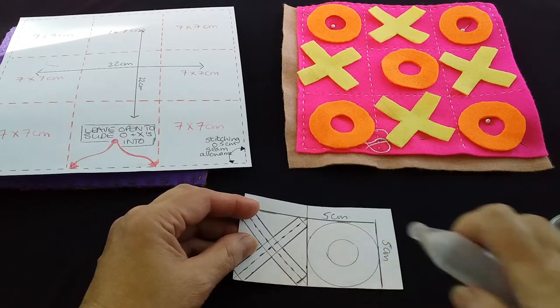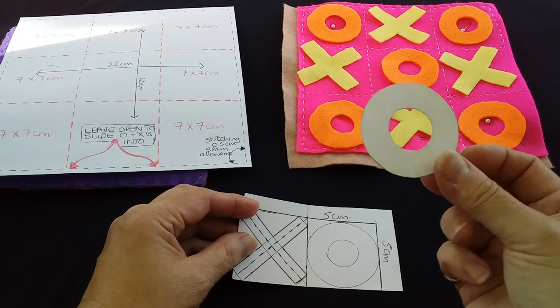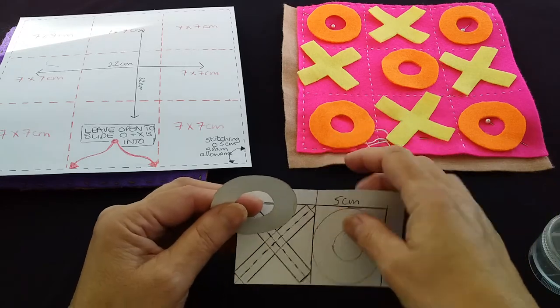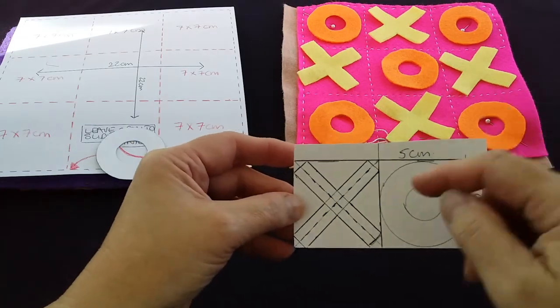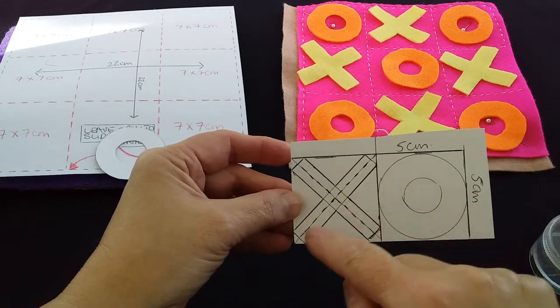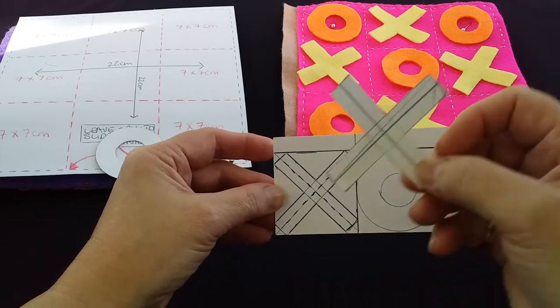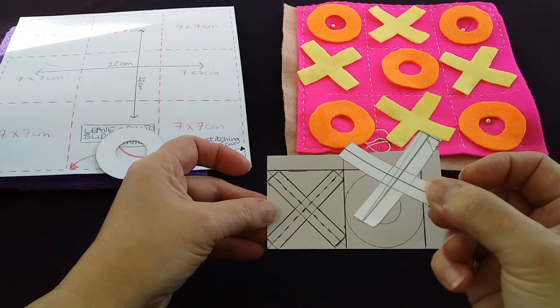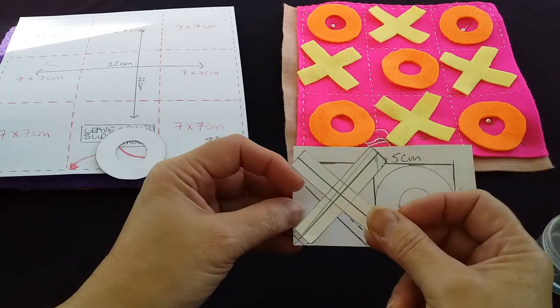The little crosses, I've simply taken my square, drawn a diagonal line, measured half a centimeter on either side so that I can make it thicker, and there's my little cross. So it's really easy to be able to create your pattern pieces from what you already have.